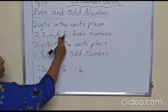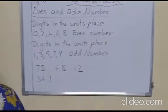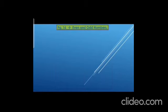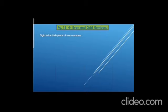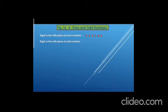And if you have 0, 2, 4, or 6 in the units place, then it is an even number. Now let us do even and odd numbers, page number 16. For even and odd numbers we have to see the digit in the units place. The digit in the units place of an even number will be 0, 2, 4, 6, or 8. The digit in the units place of an odd number will be 1, 3, 5, 7, or 9.